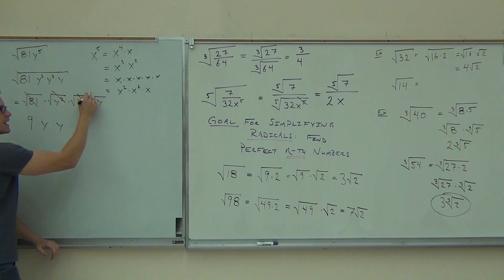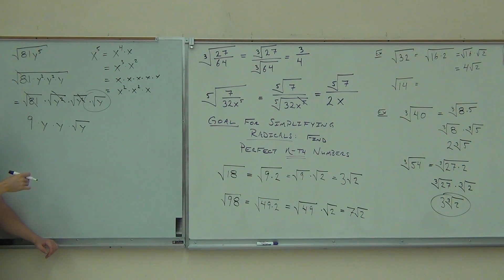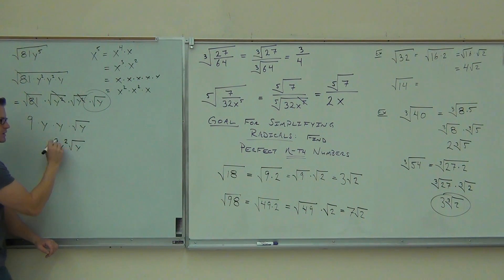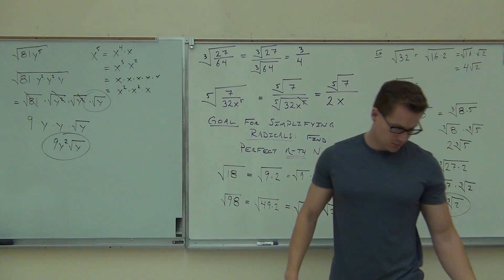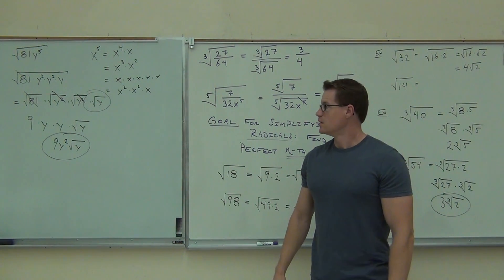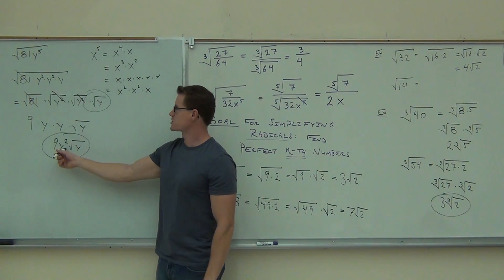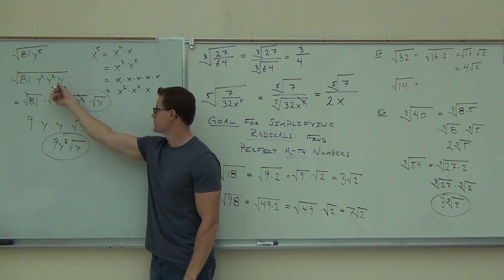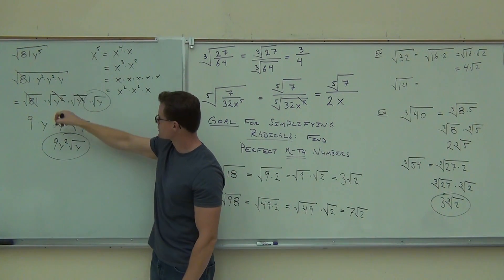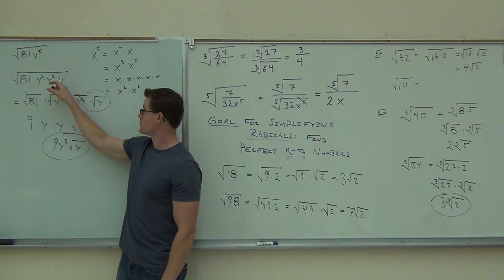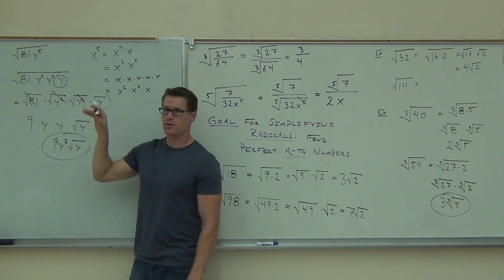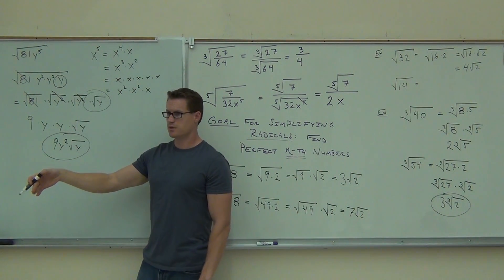In our case, we cannot simplify the square root of y — I'm just going to leave that square root of y. Can I write this any simpler? Nine y squared. Let's put those y's together: 9y² times the square root of y. That's as good as I can make it — completely simplified. And you can get directly from the original expression to this answer: each y squared gives you a y outside the radical, but the lone y stays inside because it doesn't match the root.